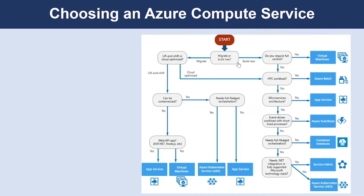What if it is a brand new environment? Then you have many other decisions to take. If you want full control, you can of course choose a virtual machine. If you don't want full control but need high-performance compute for your workload, you would choose Azure Batch. In some scenarios you would need a microservices architecture — that's where you would choose App Service.